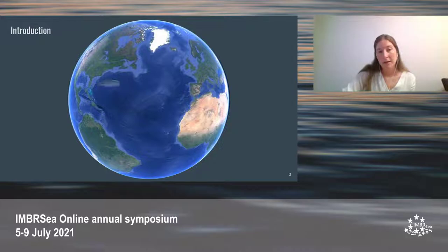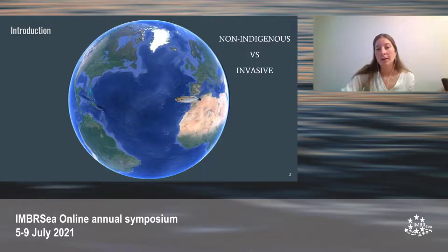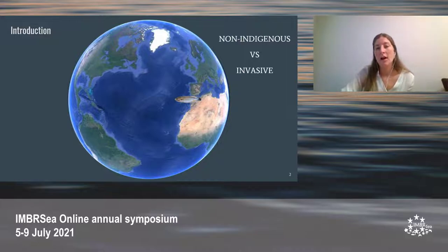With increasing anthropogenic effects, the introduction of non-indigenous species is increasing worldwide. This is really dangerous, as they can become invasive if they don't find any competitors or predators. It is really important to distinguish between non-indigenous and invasive species because the consequences they could have are really different. Estuaries are a specially vulnerable ecosystem for the introduction of non-indigenous species due to human agglomeration and rising seawater temperature.